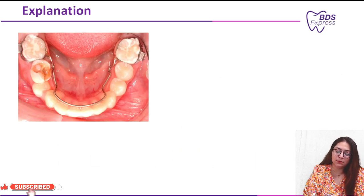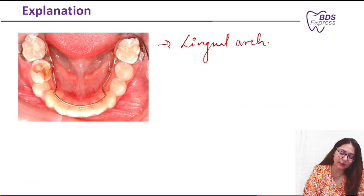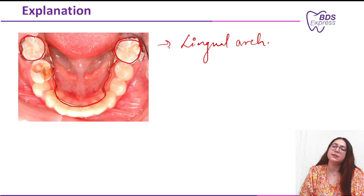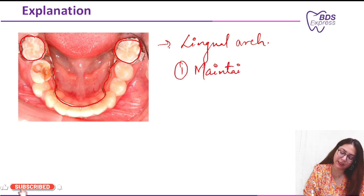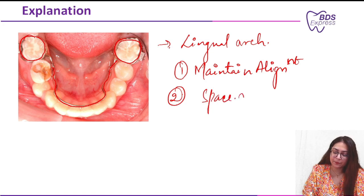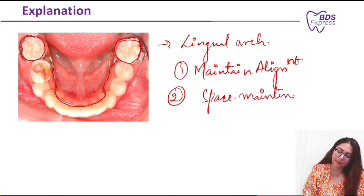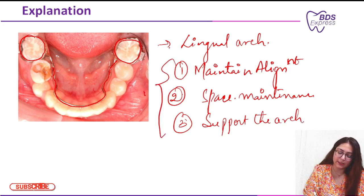This is your lingual arch retainer. Why lingual arch? Because this wire is present adapted to the lingual side, and this band is cemented to the first molar. This is your lingual arch. The three basic functions are: first, to maintain the alignment; second, to maintain the space; and third, to support the arch.